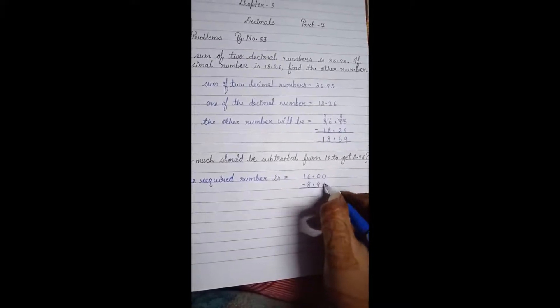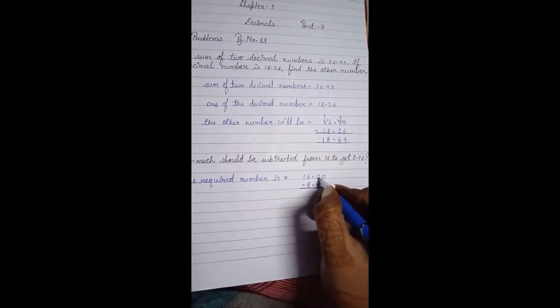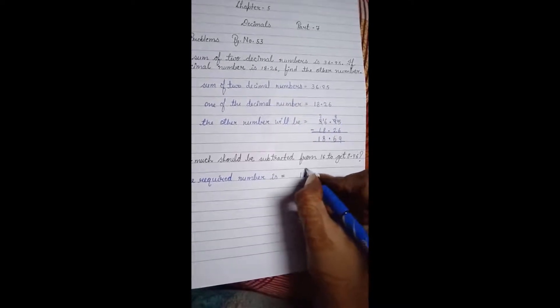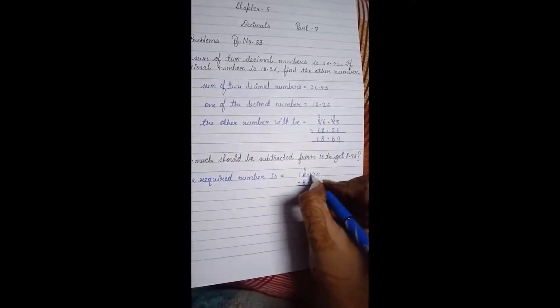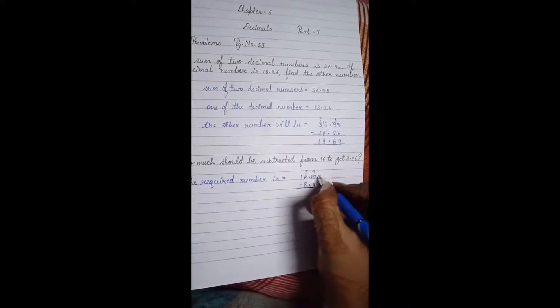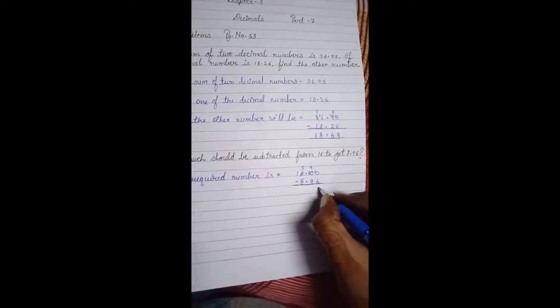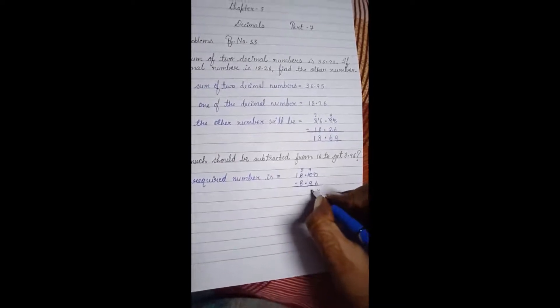Here we cannot subtract 6 from 0. We have to take borrow. But this number is again a 0, so we will take borrow from it. Now it is 10, and it will remain 9 and 10. Now 10 minus 6 is 4, 9 minus 9 is 0.